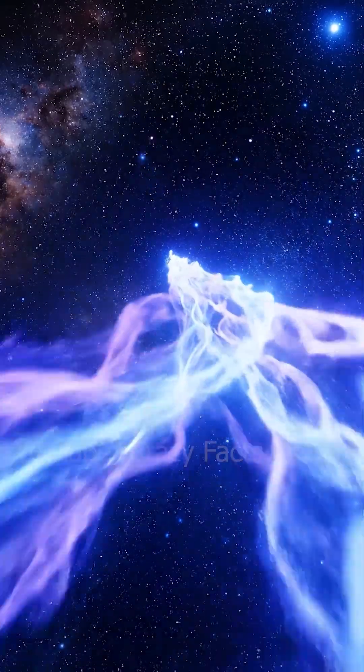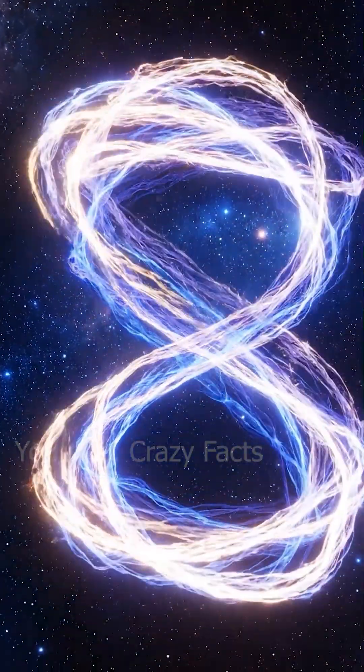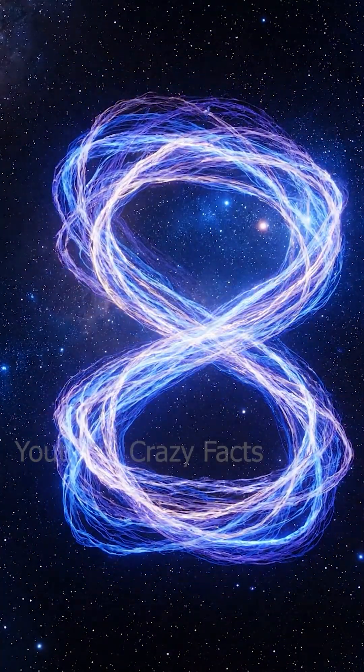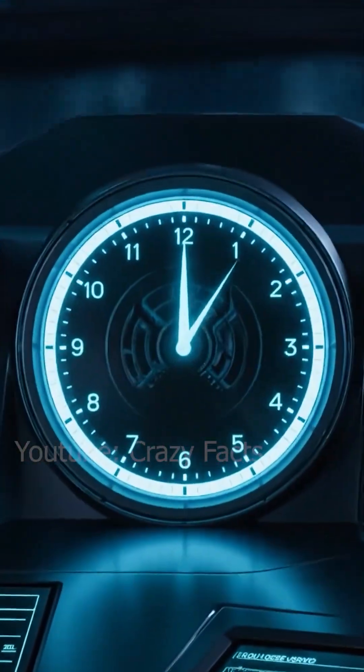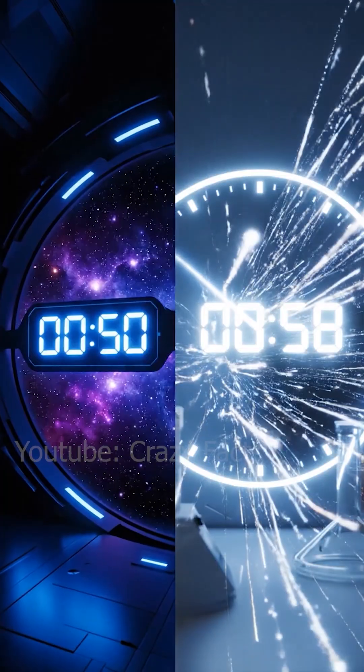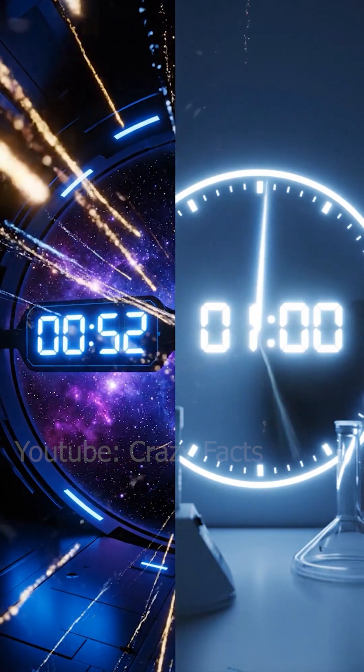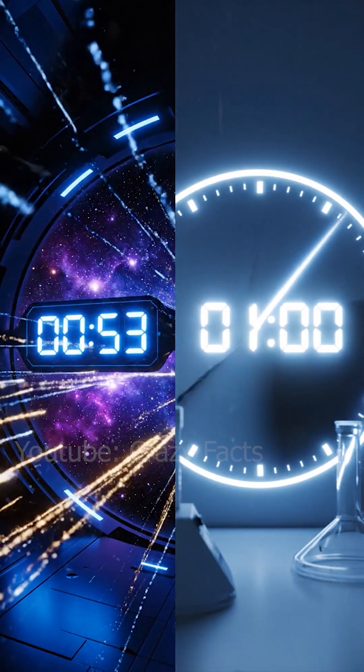Using Einstein's formula, if you travel at half the speed of light, time for you slows by about 1.15 times. 52 seconds on your ship would equal 60 seconds on Earth. At 99% of the speed of light, time slows by a factor of 7.1. The closer you get to light speed, the more dramatic the effect becomes.